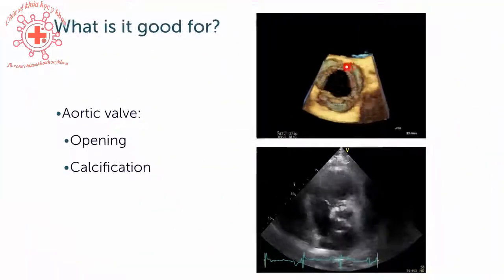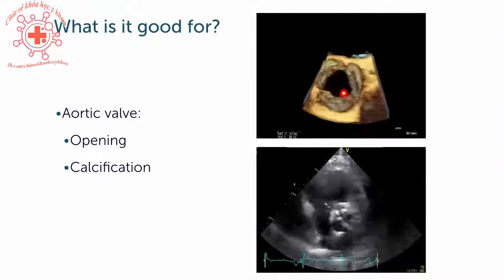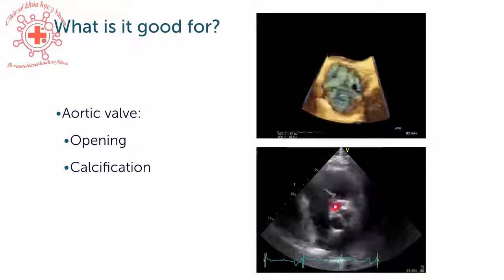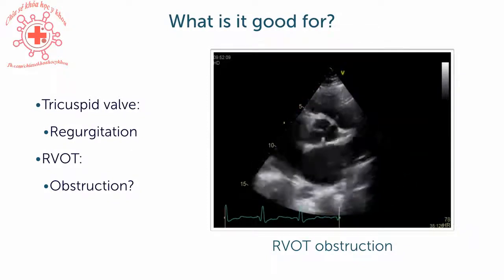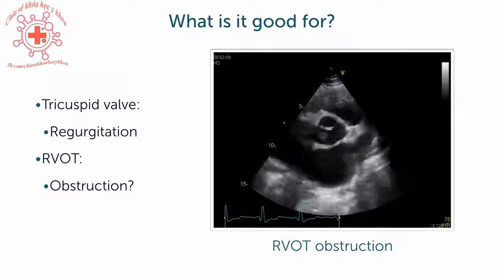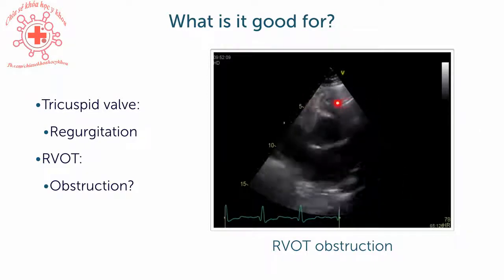There are many clinical applications of this view. The nice thing is that you have an unobstructed view of the aortic valve, which allows you to see all three cusps simultaneously and therefore assess the opening motion of the aortic valve and the degree of calcification — very important for aortic stenosis. If you modify the view a bit and focus more towards the tricuspid valve, you can look at TR, and sometimes this is where you'll get the highest TR signal to quantify pulmonary pressure. You can also look at the right ventricular outflow tract to detect obstruction.